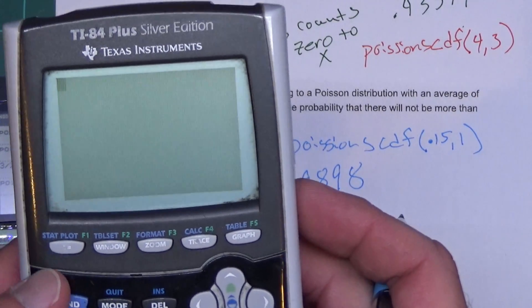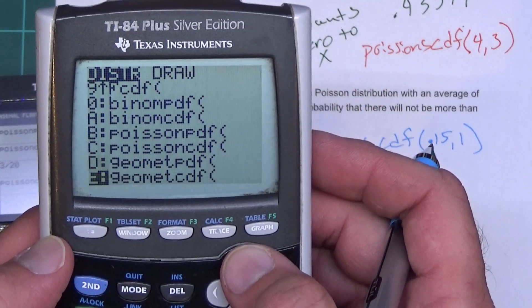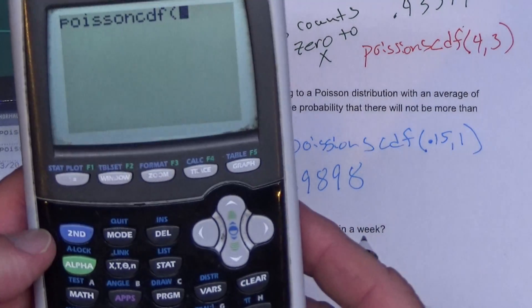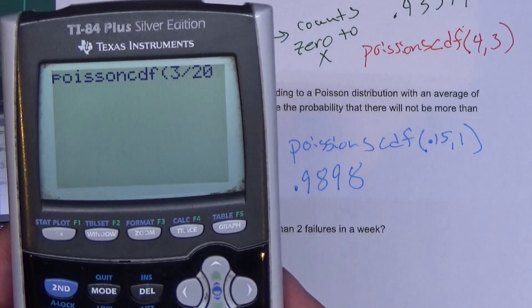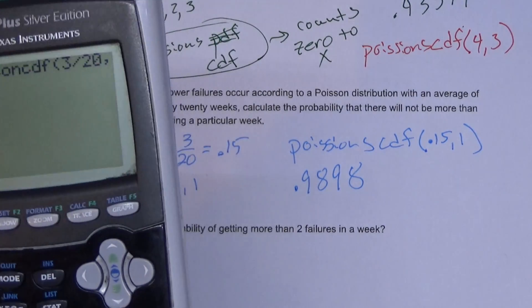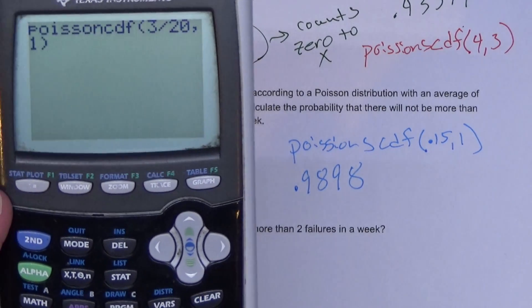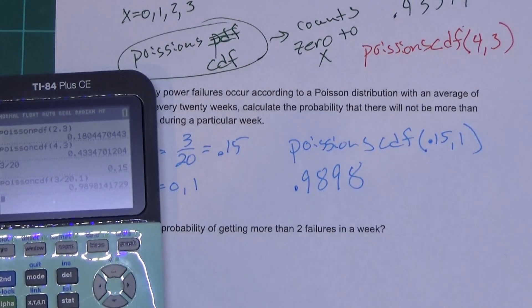For this one I should get the same answer here. Hit clear, second, VARS, hit the arrow up to Poisson CDF. Now here I can still do the same thing - I can type 3 divided by 20 comma and then one, close parenthesis. You don't have to close that parenthesis. Press enter - I'm getting the same answer.